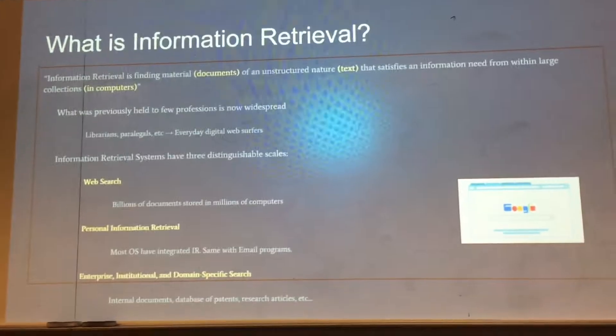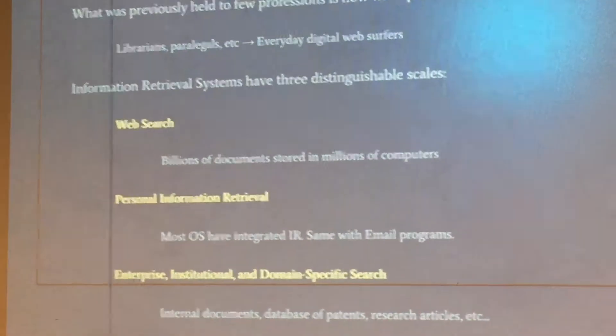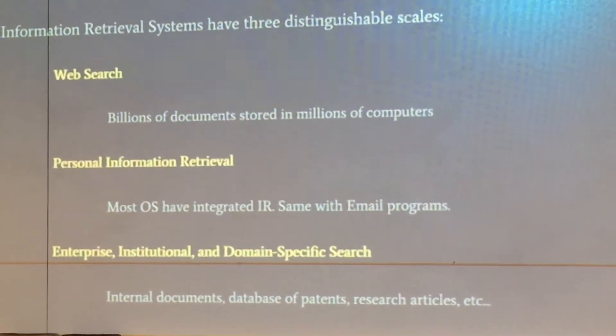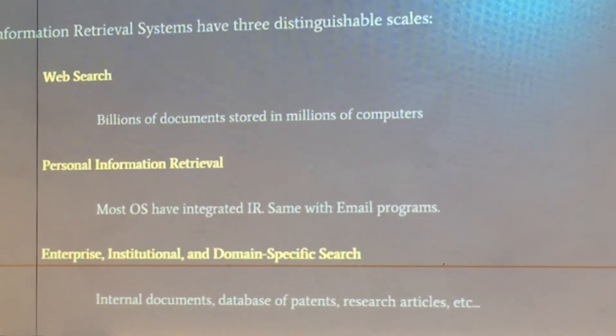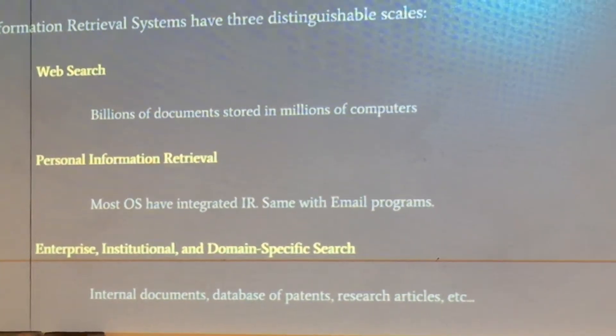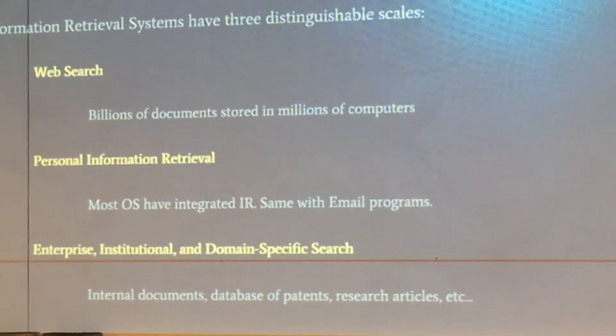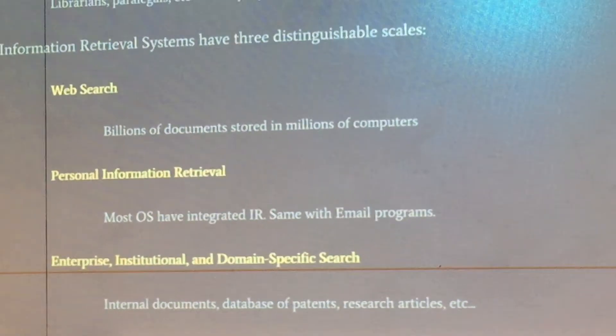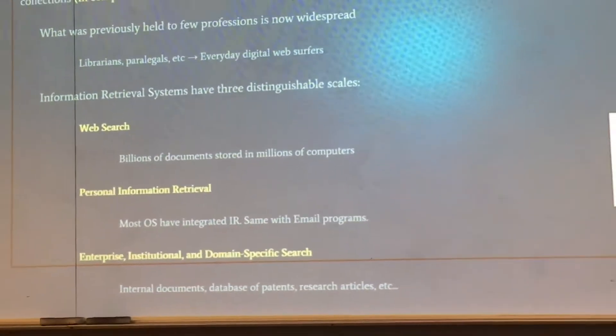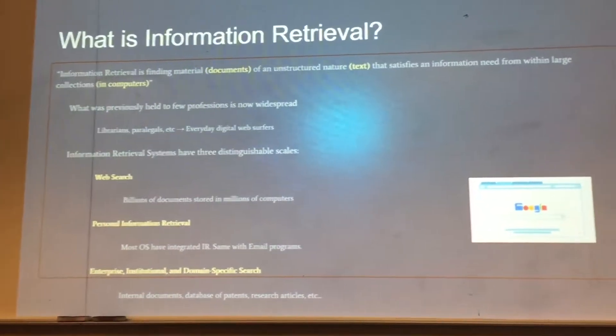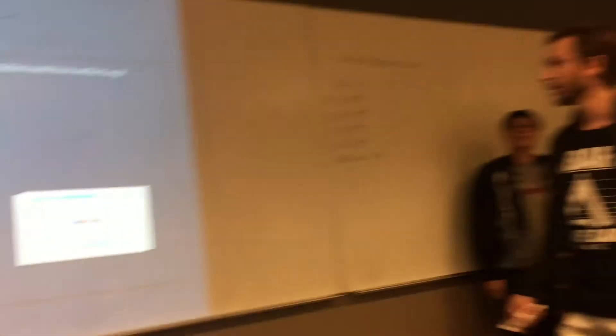There are information retrieval systems at three distinguishable scales. First is web search — this can be for any type of information, with billions of documents, likely more now than when this was written, stored on millions and millions of computers. Second is personal information retrieval — like integrated OS systems and emails, just being able to retrieve personal information about yourself. And then enterprise, institutional, and domain-specific — this could be a company with internal documents, databases, etc.